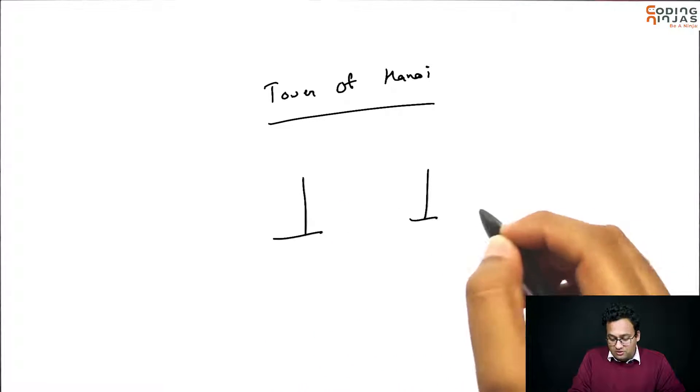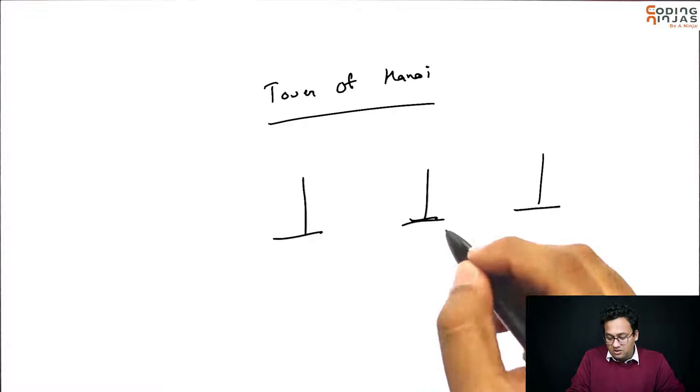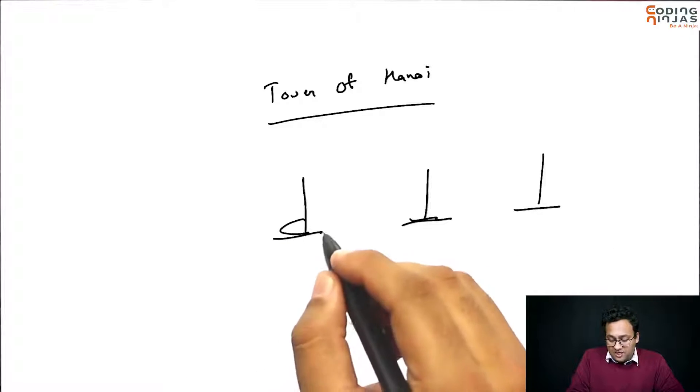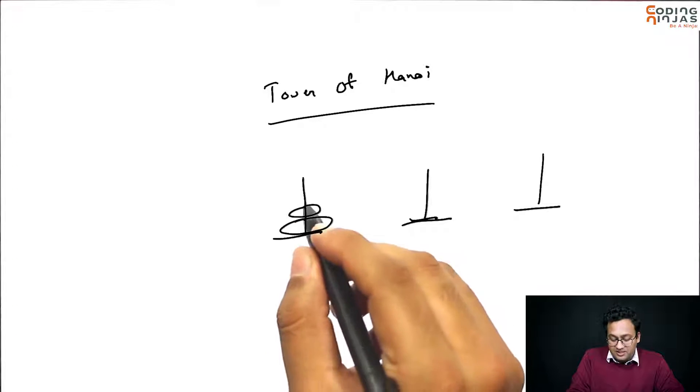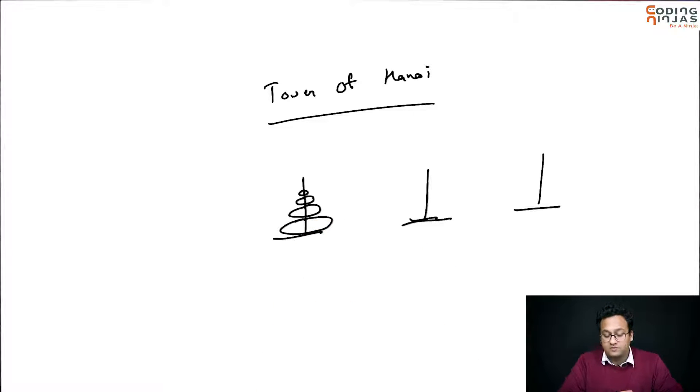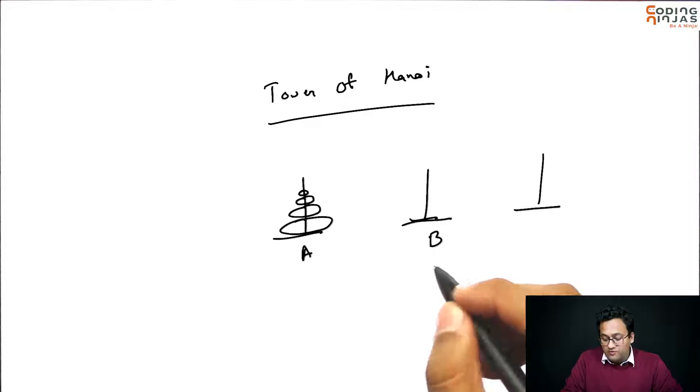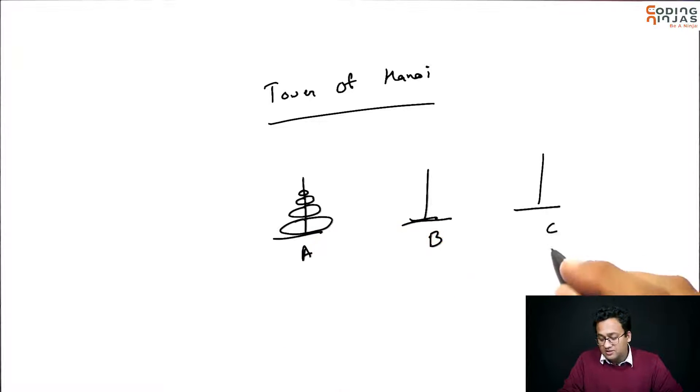We are given three poles. The first pole has some disks in it, let's call it A. You have to move all these disks to C. You can use B as a helper.